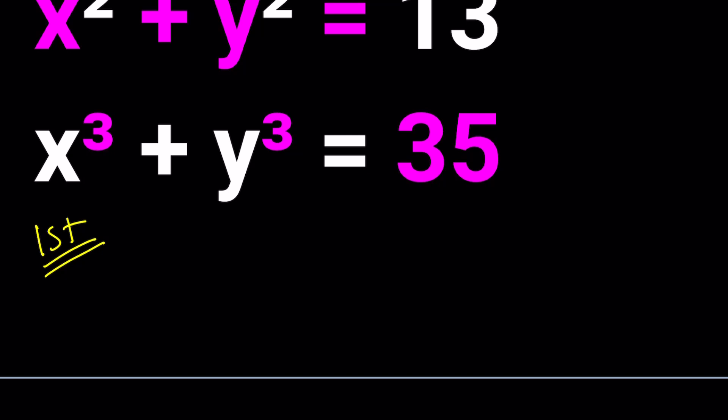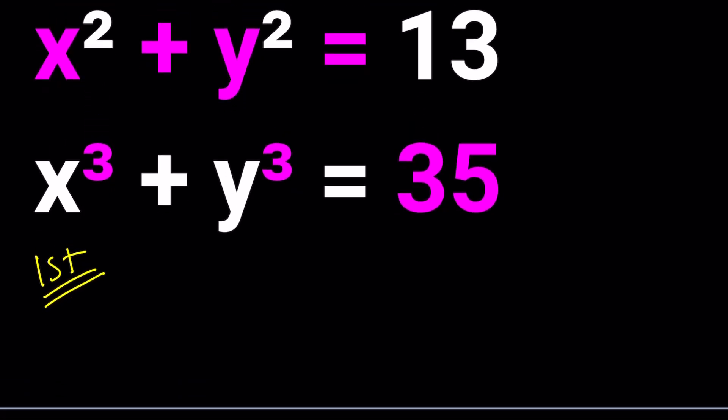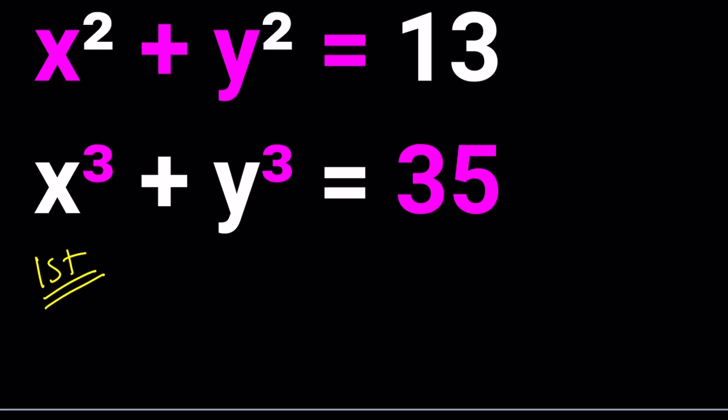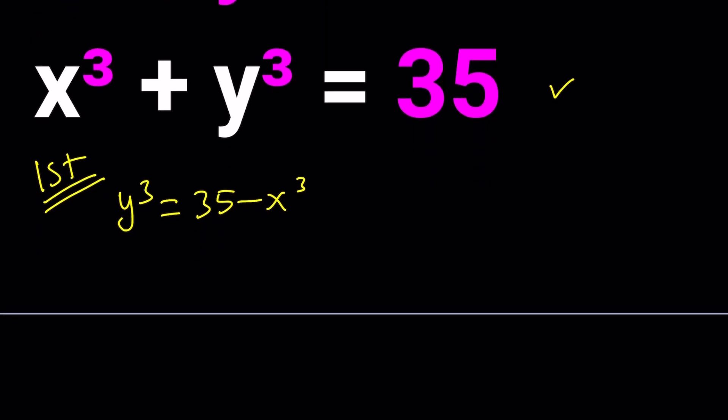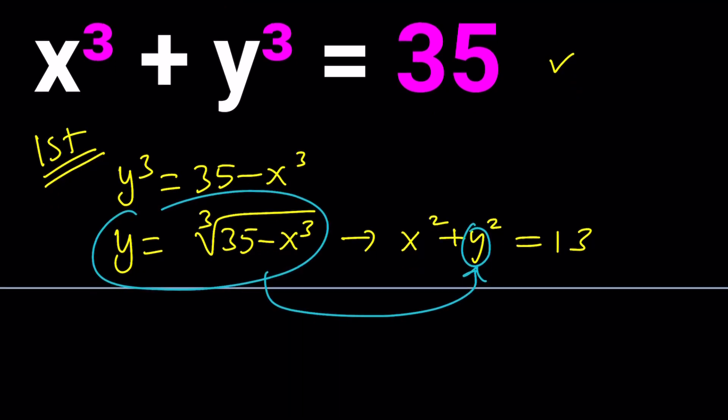Let's start with the first method. For my first method I'm going to do something super brute force-y. If you isolate y cubed from the second equation you get 35 minus x cubed, and then cube root both sides. The reason why I start with the cubic equation is because I don't want to deal with the plus minus signs. They're kind of annoying. So let's go ahead and cube root both sides and we get the cube root of 35 minus x cubed.